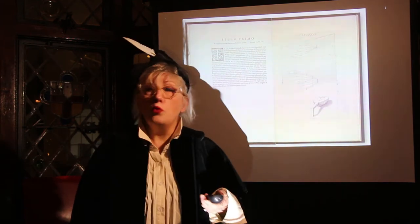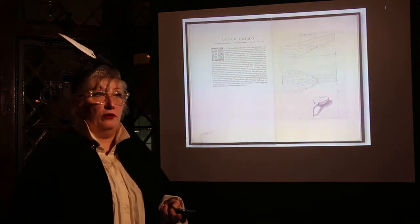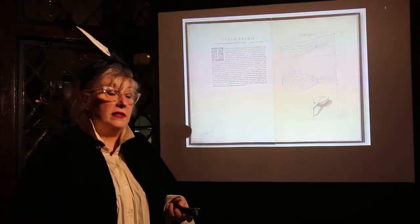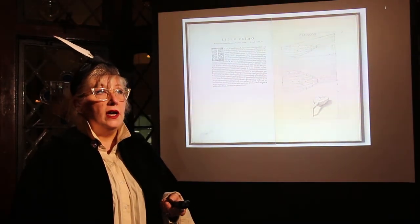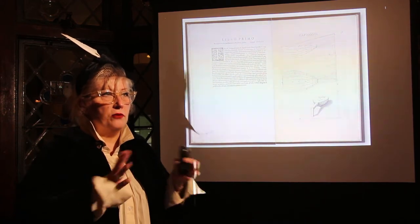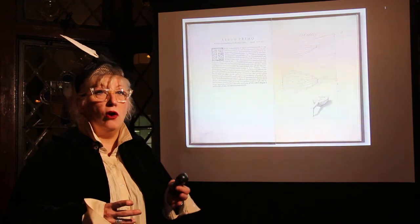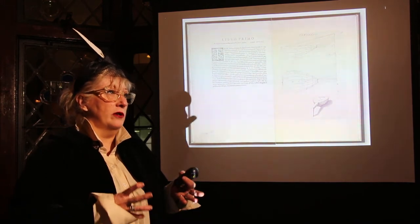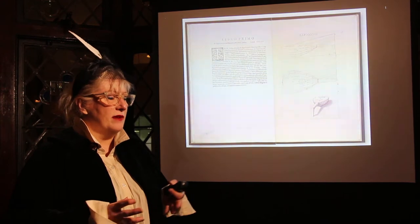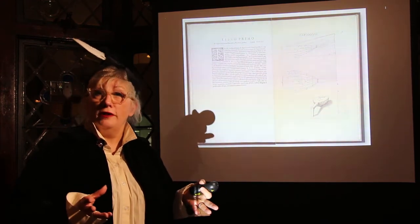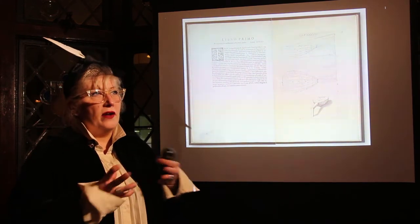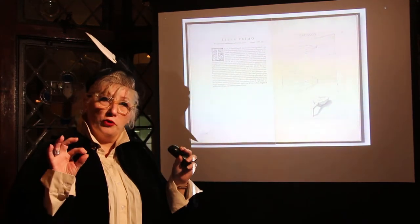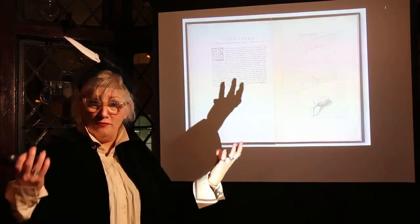We do not know exactly how the lute as we know it arrived in Europe. We can only suppose it was during the wars in Spain at the beginning of the 11th century, because the lute is somehow related to the transformation of the oud, still used in North Africa and the Middle East. The name 'al-oud' — the Arabic name — means 'the wood one,' referring to the body made of very thin strips of wood.